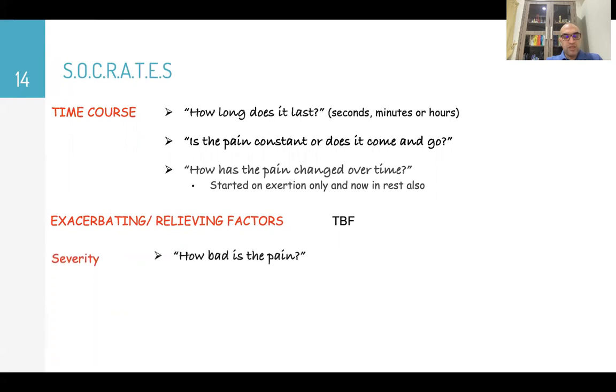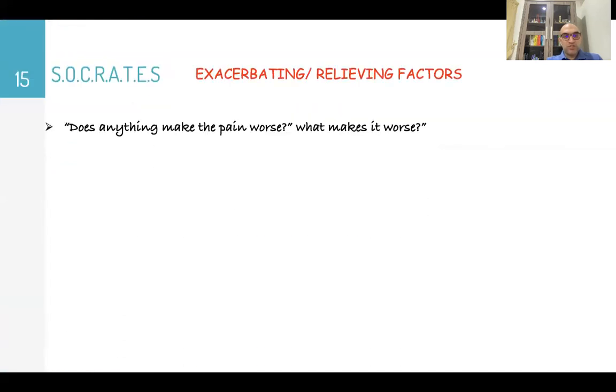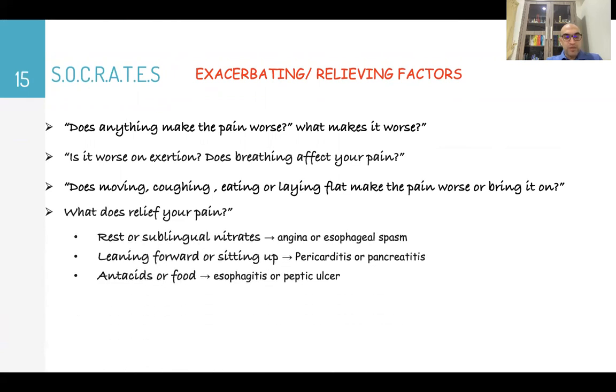Exacerbating and relieving factors will be next slide. Then severity, how bad is your pain? How severe is your chest pain? On a scale of 0 to 10, how severe is the pain? If 0 is no pain and 10 is the worst pain you have ever experienced. Exacerbating and relieving factors. Does anything make the pain worse? What makes it worse? Is it worse in exertion? Does breathing affect your pain? Does moving, coughing, eating, or lying flat make your pain worse or bring it on? What does relieve your pain? Does rest or sublingual nitrate relieve your pain, like in angina or esophageal spasm even? Leaning forward or sitting up, like in pericarditis and pancreatitis? Antacids or food, like in esophagitis or peptic ulcer?